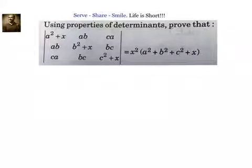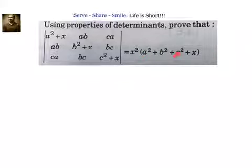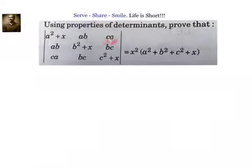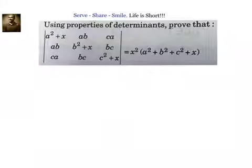My first impression when I look at this problem is that a squared plus b squared plus c squared plus x should come out from all the rows or columns. I can see a squared plus x here. If I can somehow make the other terms b squared and c squared, then I should be able to take a squared plus b squared plus c squared plus x as a common factor.